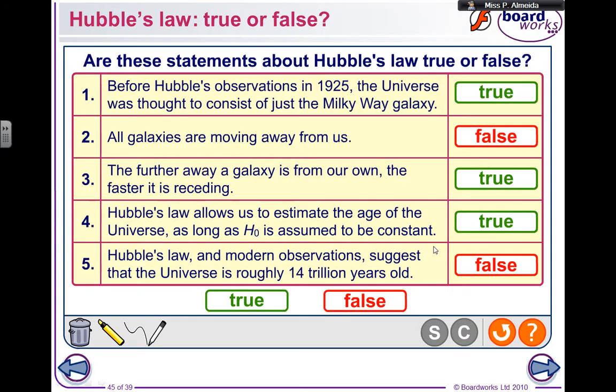Now, let's see why these sentences are either true or false. My PowerPoint is all done by me, apart from these slides. This one is from BoardWorks. Before Hubble's observations in 1925, the universe was thought to consist only of the Milky Way galaxy. That is true. His observations made us see that there are more galaxies in the universe and that they are all moving from us apart from Andromeda. So that's why number two is false. All galaxies are moving away from us - that's true for all galaxies apart from Andromeda, which is the galaxy that is closer to us, the Milky Way galaxy. That one is actually moving towards us because it's in a route for colliding with us. It shows blue shift instead.